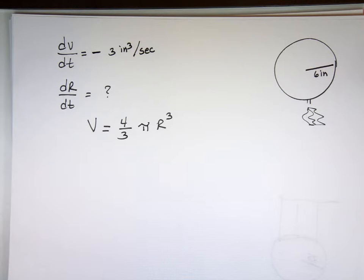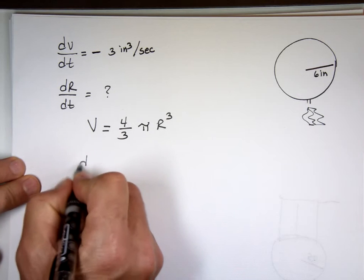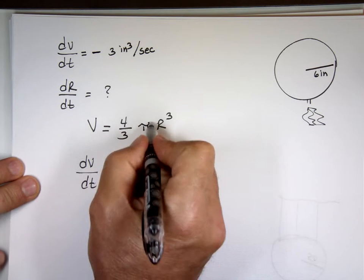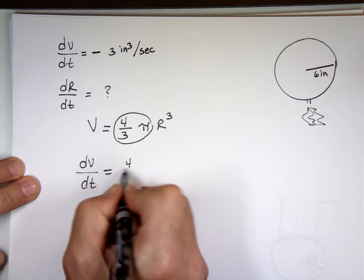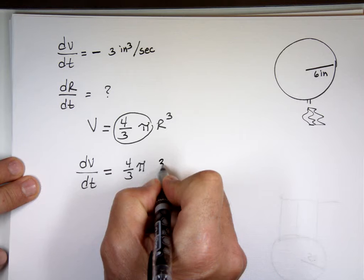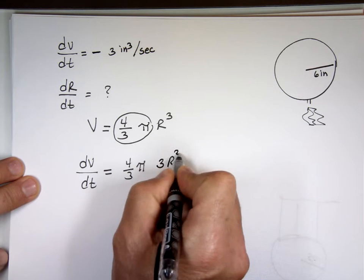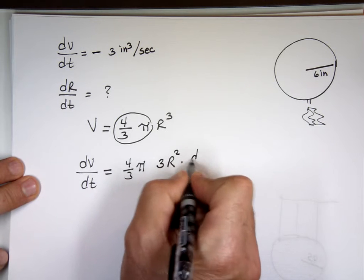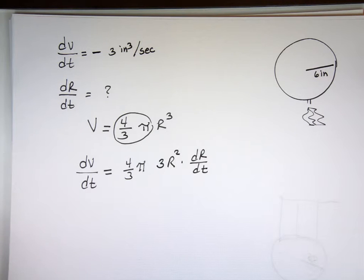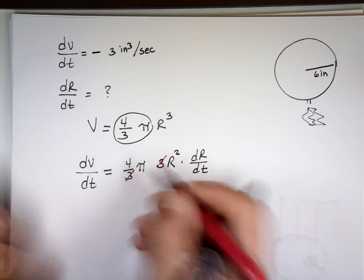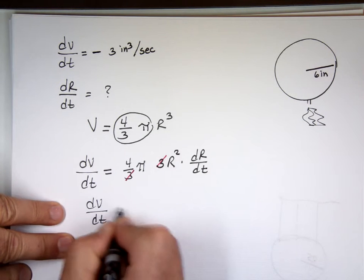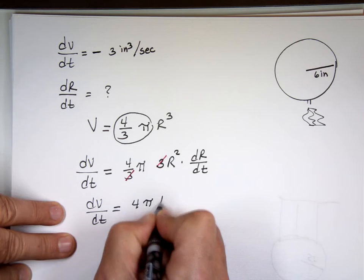Four-thirds pi r cubed. Now, the volume is... Let's take the derivative. The derivative of that is dv dt. Four-thirds pi is a constant. Leave it alone. What is the derivative r cubed? Three what? Three r squared. Keep going. You're not done. Dr dt. We've taken the derivative with respect to t. These two cancel each other out. So, I have dv dt equals four pi r squared dr dt.